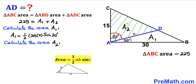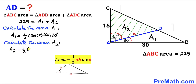Now let's calculate the area A₂ of triangle ADC using the same area formula. In this case, our side lengths are x and 15, and the angle between them is 60 degrees. So A₂ equals one half times x times 15 times sine of 60 degrees.